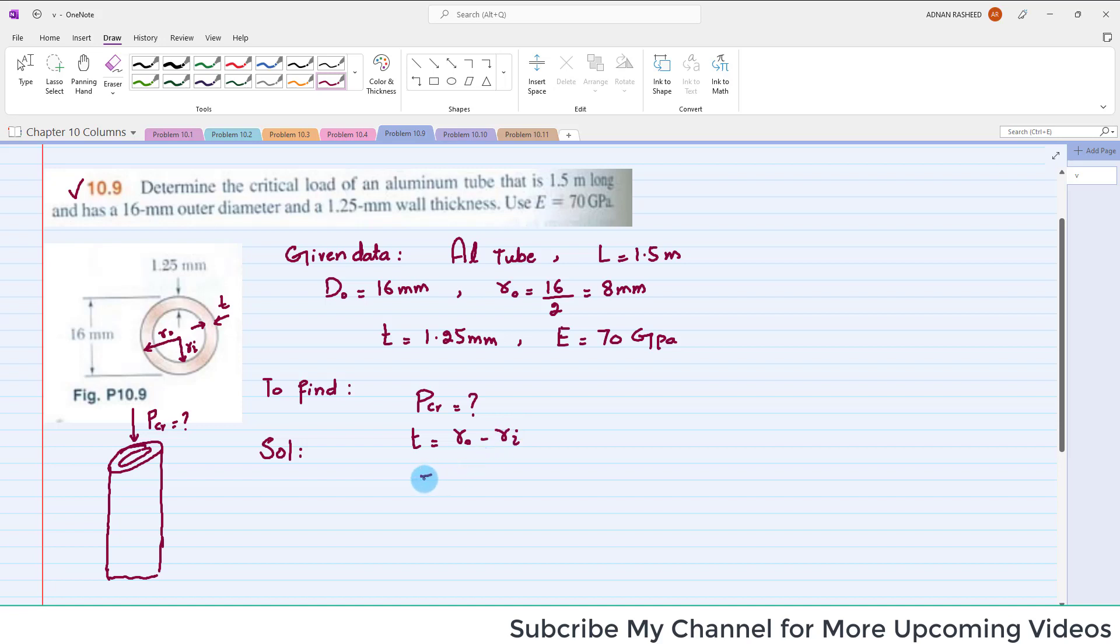Inner radius will be equal to R naught minus t. You can put the value: 8 minus 1.25, so R inner will be equal to 6.75 millimeters.